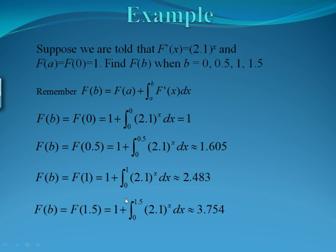Let's start with f of 0. We know that it'll equal f of a, which we said was equal to 1, plus the integral from 0 to 0 — because that's our new b value. If you integrate something over the same bounds, 0 to 0, it has no area. So if you put this in your calculator, it'll be 0. So 0 plus 1 equals 1.